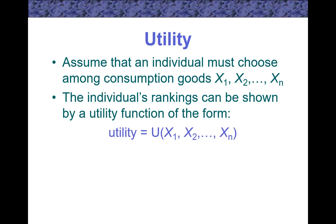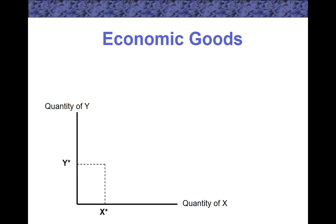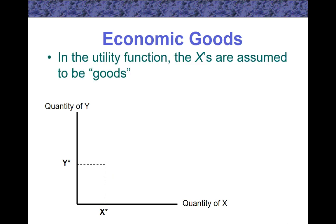Keep in mind that everything is being held constant except X1, X2, XN. Economic goods: In the utility function, the X's are assumed to be goods. More is preferred to less.